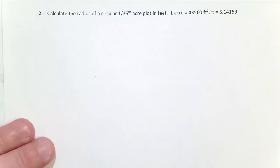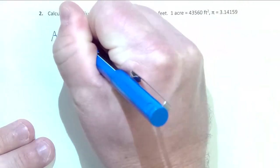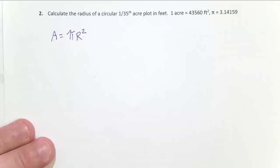And so we need to start out here with the formula for a circle, which we know is area equals pi R squared, where R is the radius, A is the area.